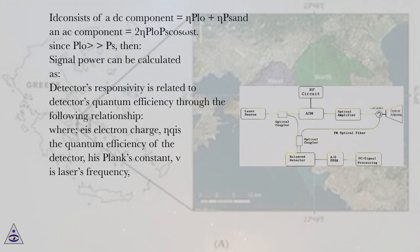It consists of a DC component = ηP_lo + ηP_s and an AC component = 2ηP_lo P_s cos(ωₛt). Since P_lo > P_s, then signal power can be calculated as: